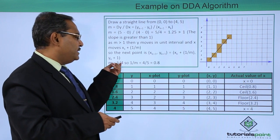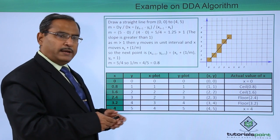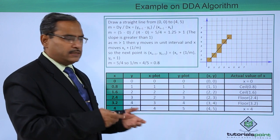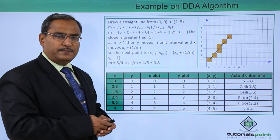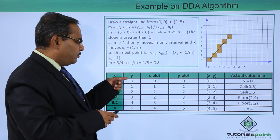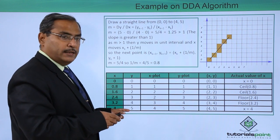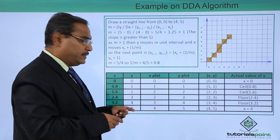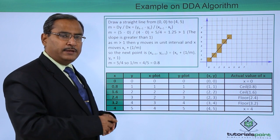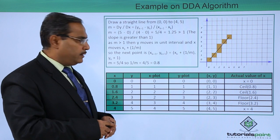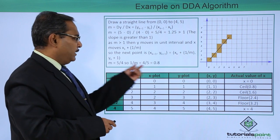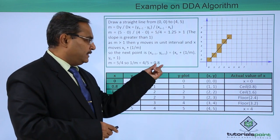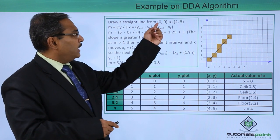Now what is m? m is 5 by 4 and what is 1 by m? That is 4 by 5 and the value is 0.8. From here we got this idea that y will be increased by 1, so it will be ranging from 0 to 5. That is why you see it is ranging from 0 to 5 and each time it has got increased by 1.